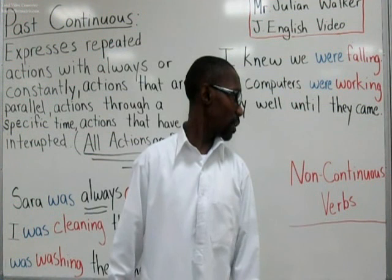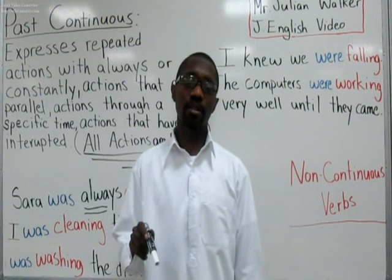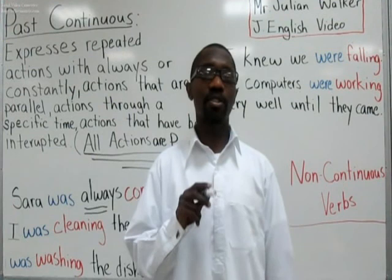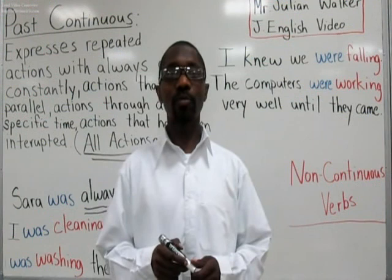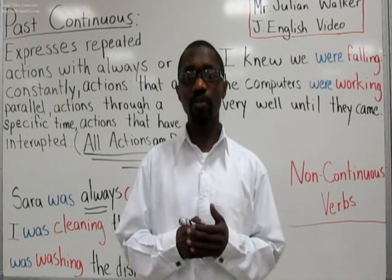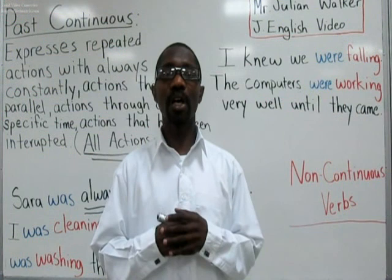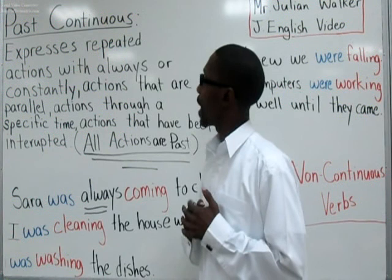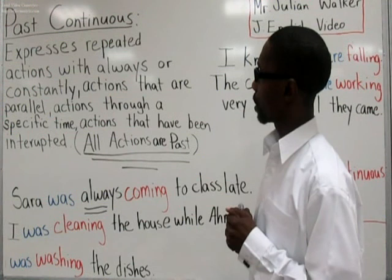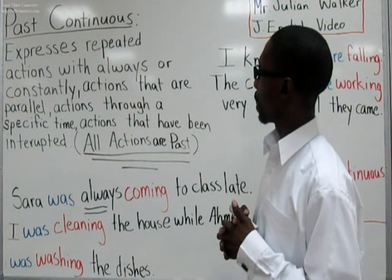I have written down here non-continuous verbs. These are verbs that you cannot add ing to the end. There are many such verbs. I suggest you go on a search engine and type in non-continuous verbs, or perhaps purchase an English grammar book, and try to remember the verbs that are non-continuous. To recap: past continuance expresses repeated actions with always or constantly, actions that are parallel, actions through a specific time, and actions that have been interrupted. All actions are past.